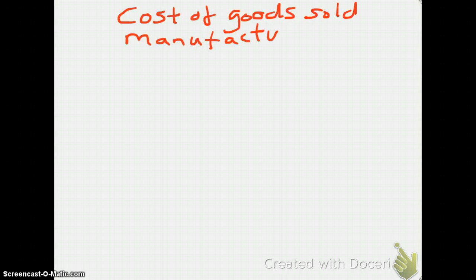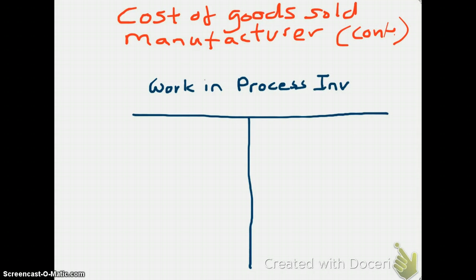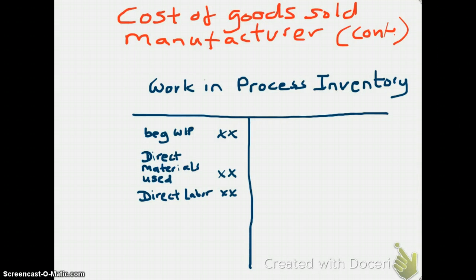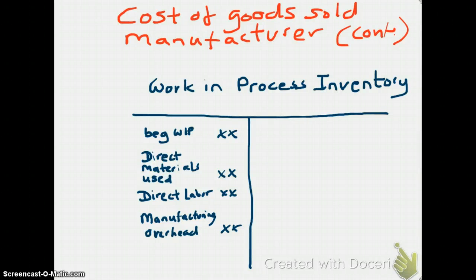Now let's take a look at our work in process inventory account. It also has a beginning balance, which represents incomplete goods remaining at the end of the last period. Whatever you put into production has three components: direct materials used (from your raw materials inventory account), direct labor costs, and manufacturing overhead — including electricity, utilities, rent, and depreciation. All three of these increase your work in process inventory account.